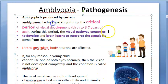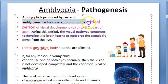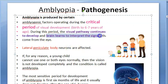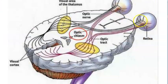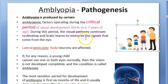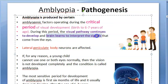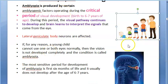There is a critical period for visual development — from birth to six to seven years of age. During this period, the visual pathway develops and the brain learns to interpret the signals coming from the eye. The brain is learning to analyze the information sent from the eye. This critical period is birth to seven years.